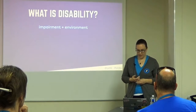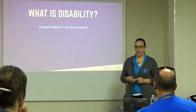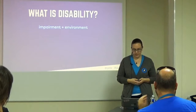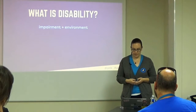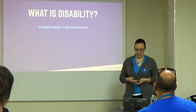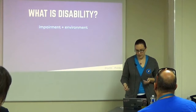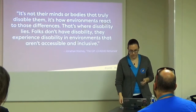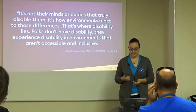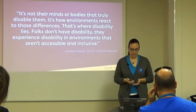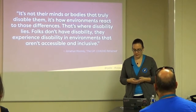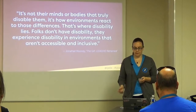Traditionally, disability has been thought of as a problem with the person — they can't walk, they can't see — and they're defined by these limitations. Over the last few years, a new way of thinking has emerged called the social model of disability, because it defines disability in the context of society as a whole, rather than as a single person's problem. Jonathan Mooney talks about this: it's not their minds or bodies that truly disable them, it's how the environments react to those differences. Folks don't have disability — they experience disability in environments that aren't accessible and inclusive.